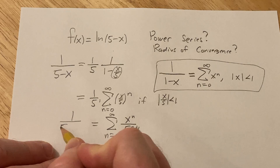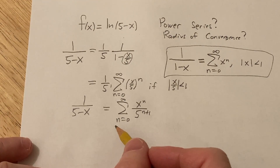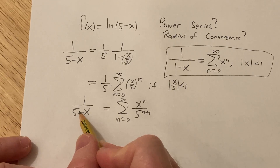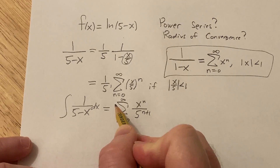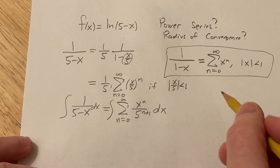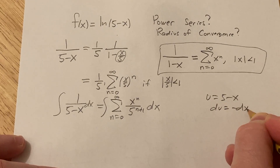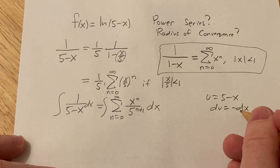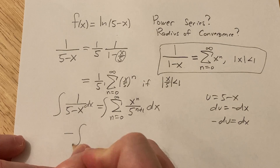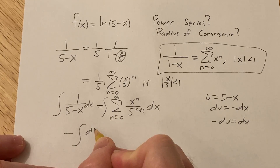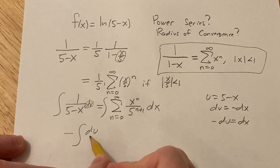So now we have a power series for 1/(5-x). We integrate both sides. On the left side, using u-substitution with u equal to 5 minus x, du equals negative dx, so this becomes negative du over u.